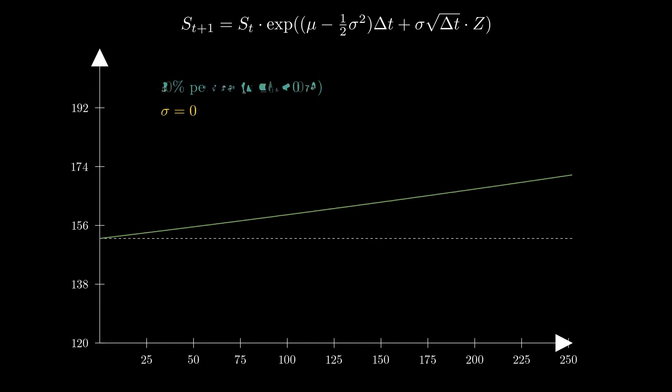If we change the mu value to 20% per year, we can see that the price races up exponentially, and down exponentially for a mu value corresponding to negative 20% per year.